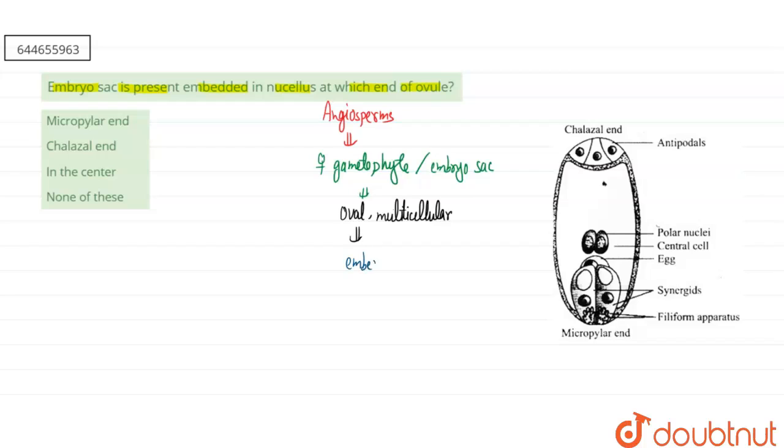embedded in the nucellus, in the surrounding nucellar cells towards the micropylar end. It is generally present at the micropylar end, and half of the ovule will be present toward this structure, toward micropylar end.